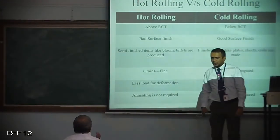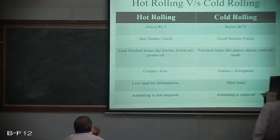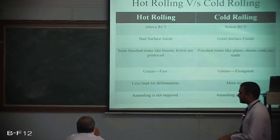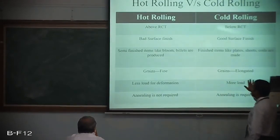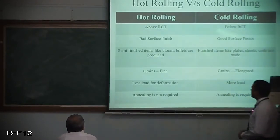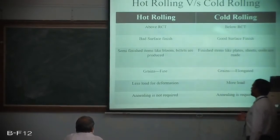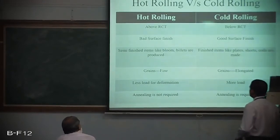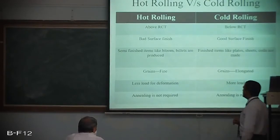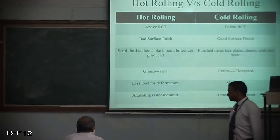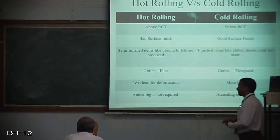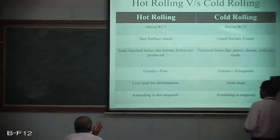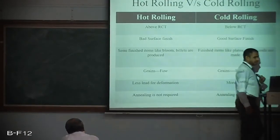Comparing hot and cold rolling: hot rolling is performed above recrystallization temperature, cold rolling below. Cold rolling doesn't mean room temperature — it is slightly elevated. Hot rolling results in lower surface finish than cold rolling. Hot rolling produces semi-finished items like blooms and billets, whereas cold rolling produces finished items like plates, sheets, and coils. Hot rolling yields fine grain structure; cold rolling yields elongated grain structure. Hot rolling requires less load for deformation while cold rolling requires more. Annealing is usually not required for hot rolling but is required for cold rolling.